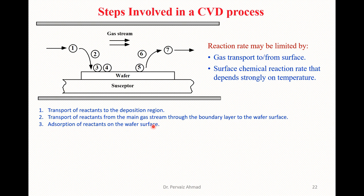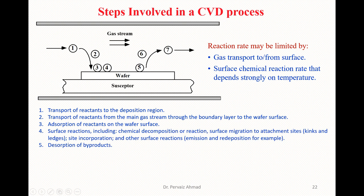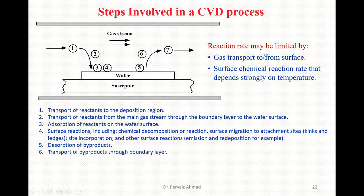Step number three is the adsorption of reactants on the vapor surface. Step number four involves surface reactions, which include chemical deposition or reactions, surface migration to attachment sites such as kinks and ledge sites, incorporation, and other surface reactions including emissions and re-deposition. Step number five is the desorption of byproducts. Step number six is the transport of byproducts through the boundary layers.